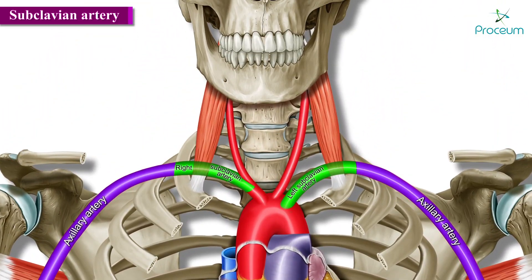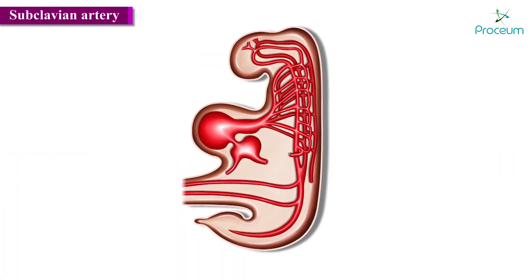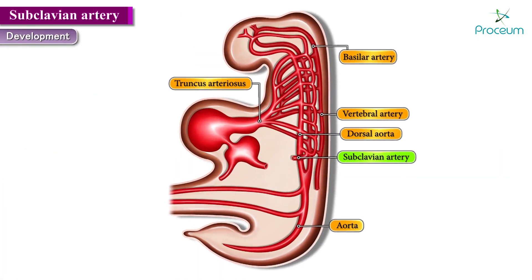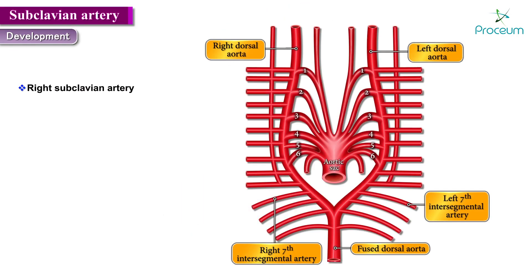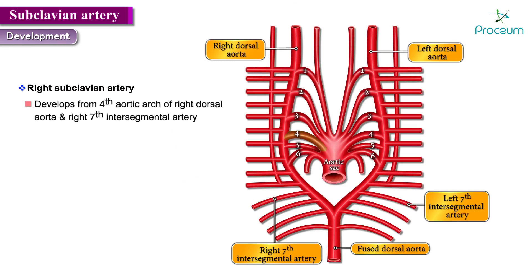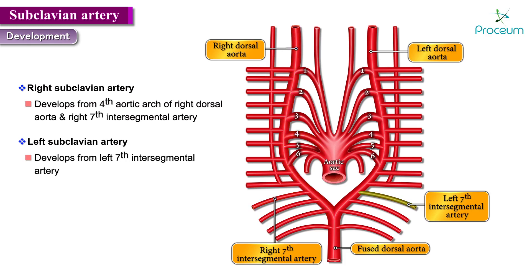Before discussing the course and branches, let's have a quick review of the development of the subclavian artery. The right subclavian artery arises from the fourth aortic arch of the right dorsal aorta and the right seventh intersegmental artery. The left subclavian artery develops from the left seventh intersegmental artery.